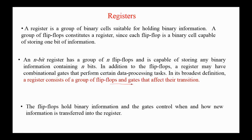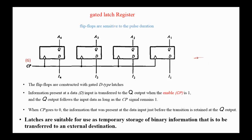The flip-flops hold binary information and the gates control when and how new information is transferred into the register. Registers can be implemented using latches. This is the circuit diagram for a 4-bit gated latch register. In latches, flip-flops operate when the enable signal or the clock pulse is active.